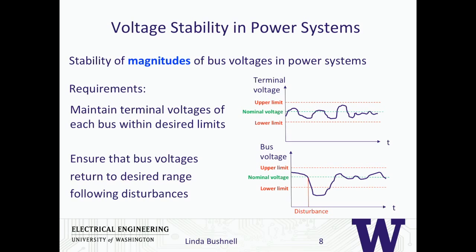We want to apply this to the three stability problems for power systems. The first one is voltage stability — the magnitude of voltage in power systems. You require two things: that the terminal voltages remain within some bound, and that after some disturbance, they go back to that bound.